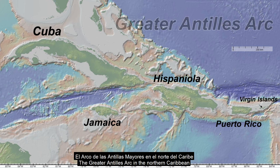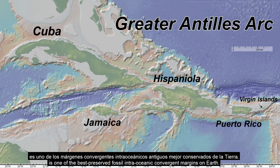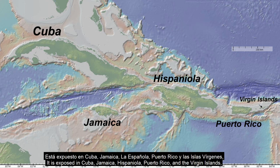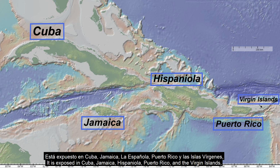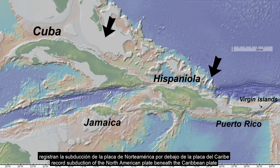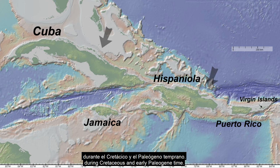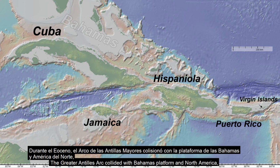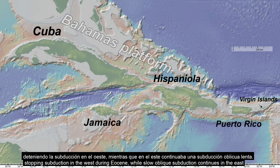The Greater Antilles Arc in the Northern Caribbean is one of the best preserved fossil intra-oceanic convergent margins on Earth. It is exposed in Cuba, Jamaica, Hispaniola, Puerto Rico, and the Virgin Islands. Spanning about 2,000 km, igneous and metamorphic rocks of the Greater Antilles Arc record subduction of the North American plate beneath the Caribbean plate during Cretaceous and early Paleogene time. The Greater Antilles Arc collided with the Bahama Platform and North America, stopping subduction in the west during the Eocene, while slow oblique subduction continues in the east.